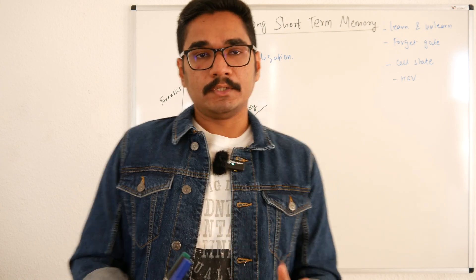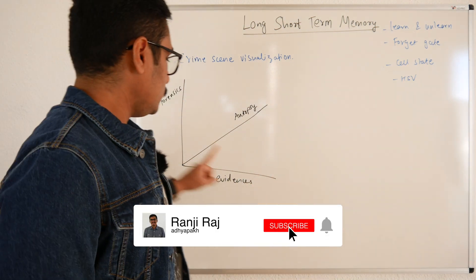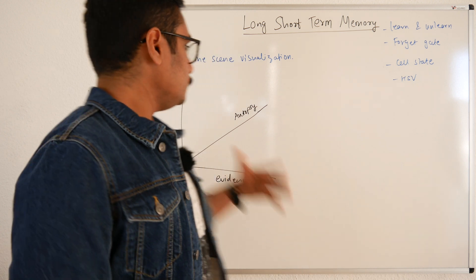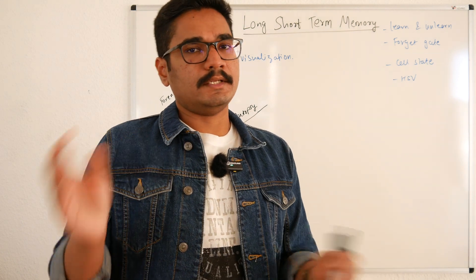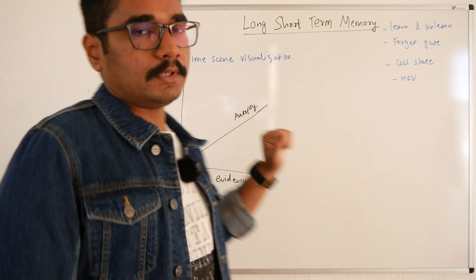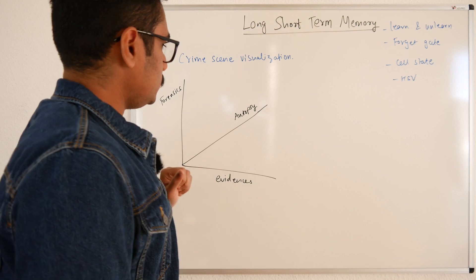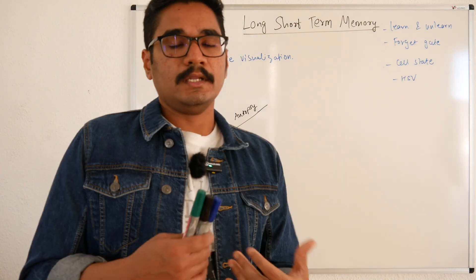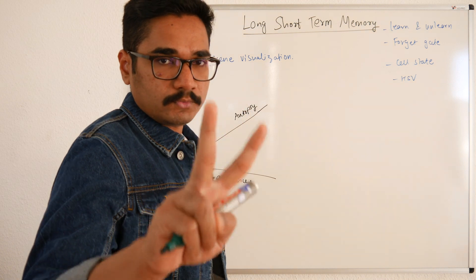This situation can be mathematically represented in three dimensions. In the first dimension we have forensics, then evidences, then autopsy. You collect these evidences, go to the forensic lab, do some trials, and get some results. Let's put this example into LSTM and see how it works mathematically. In these three cases we want to determine which dimension contributes the most in detecting or validating the crime scene.